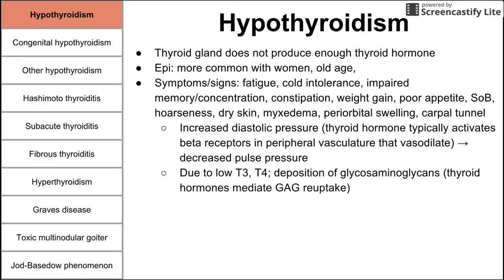Because you have low T3 and T4, you'll have higher deposition of glycosaminoglycans (GAGs), which are normally turned over by the increased basal metabolic rate driven by T3 activity. With less thyroid hormone, these GAGs accumulate.